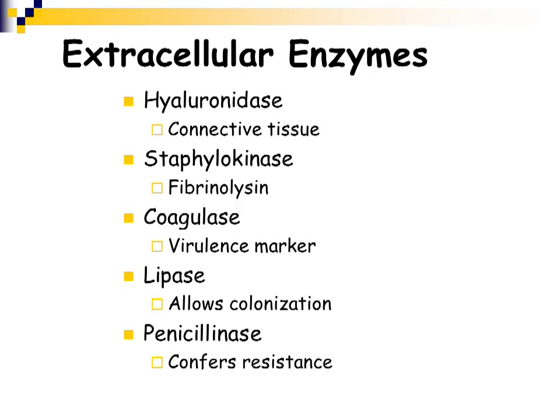Staph aureus has the ability to produce many enzymes, such as hyaluronidase, which allows the organism to get into the body and through connective tissue. It produces staphylokinase, coagulase, lipase, and also penicillinase that confers resistance to penicillin.